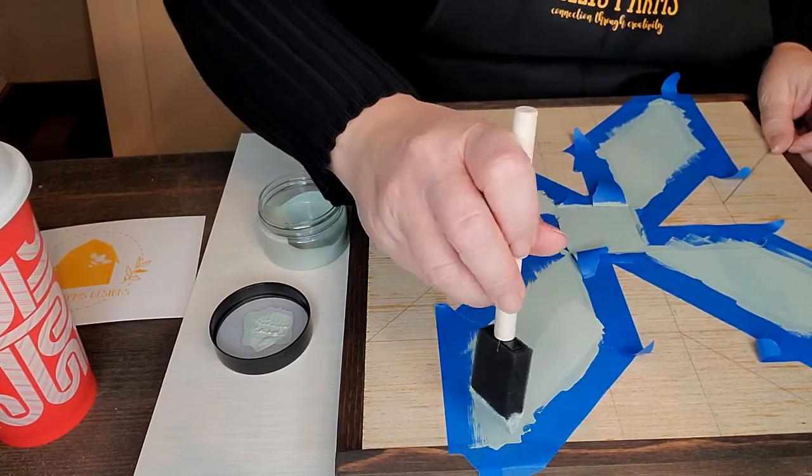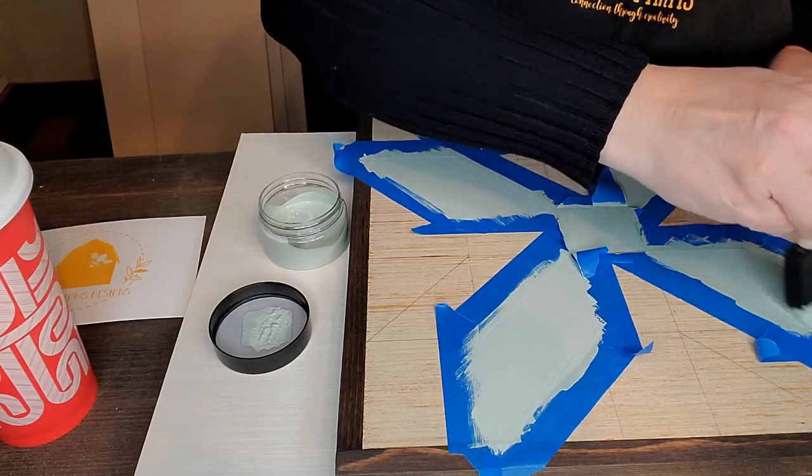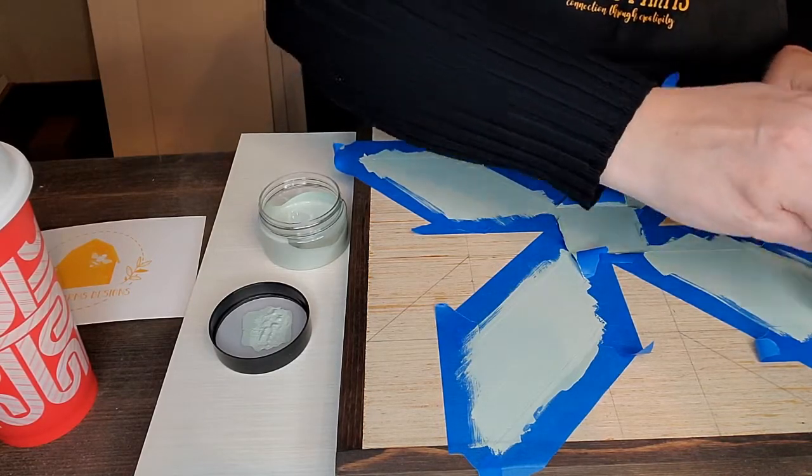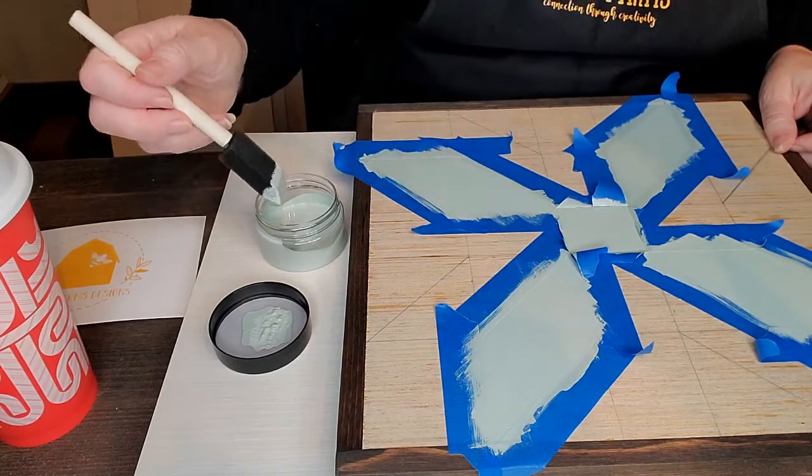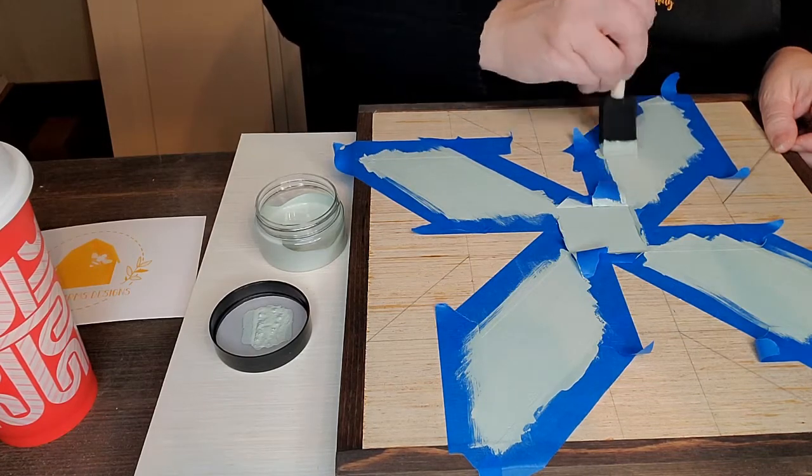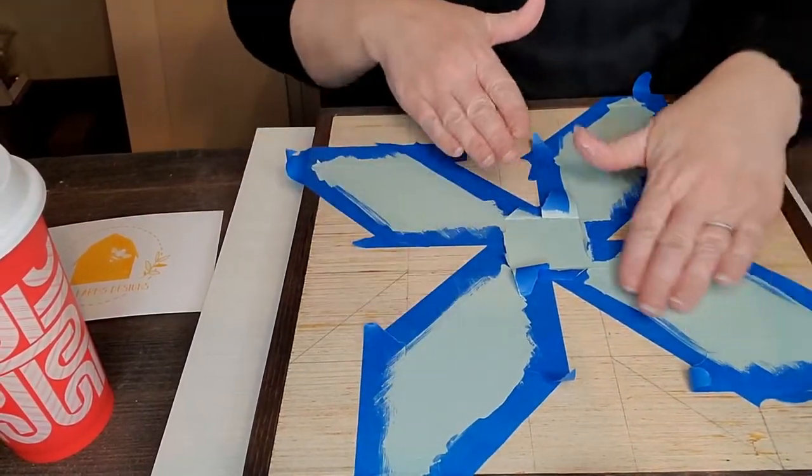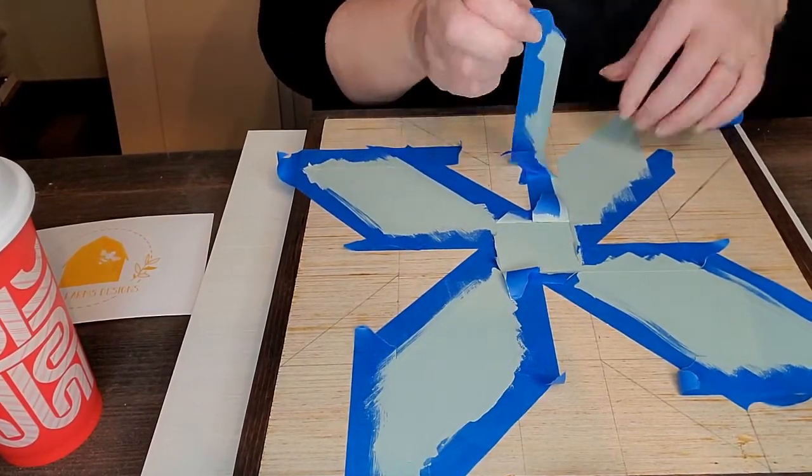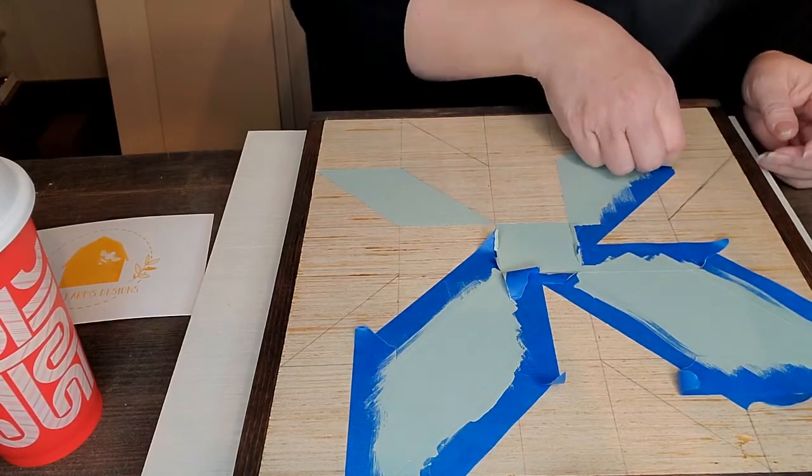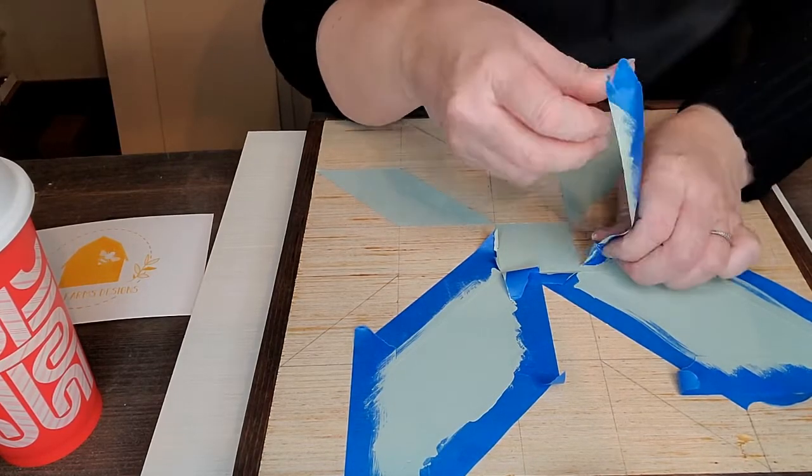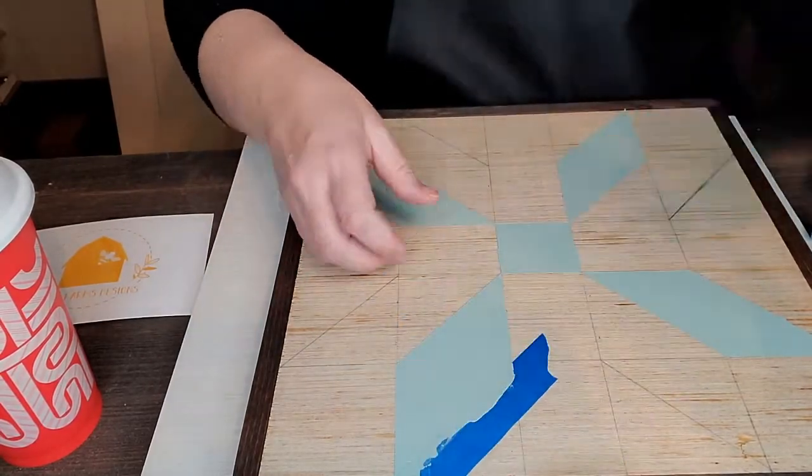You're going to let your first coat dry for like 10 to 15 minutes. Fusion mineral paint dries quickly. And you can tell if it's dry. If you touch it, if it still feels cold, then most likely the under layers of the paint are not dry. If it feels room temperature, then the whole layer of paint is dry. So you're just going to remove that tape. And look at those nice crisp lines.